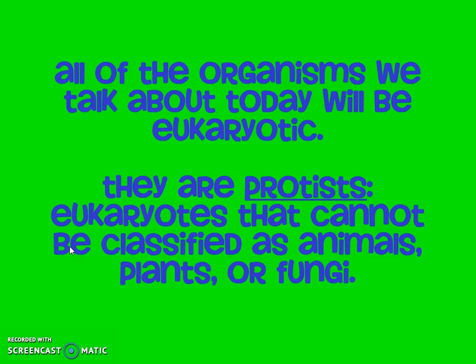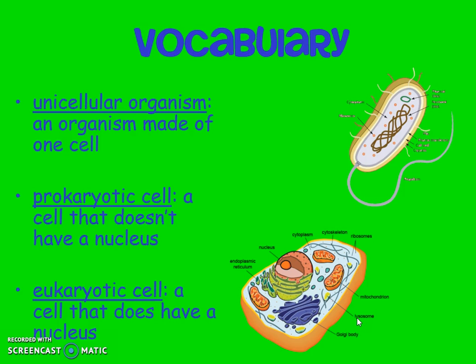Protists are eukaryotes — they have a nucleus — but they cannot be classified as animals, plants like palm trees, or fungi like yeast. A unicellular organism is an organism that is only made of one cell. We are considered multicellular; we have a bunch of cells. But a unicellular organism — we're going to talk about four of those today — they are just one cell, and they live on their own. The prokaryotic cell does not have a nucleus, and the eukaryotic cell is a cell that has a nucleus.